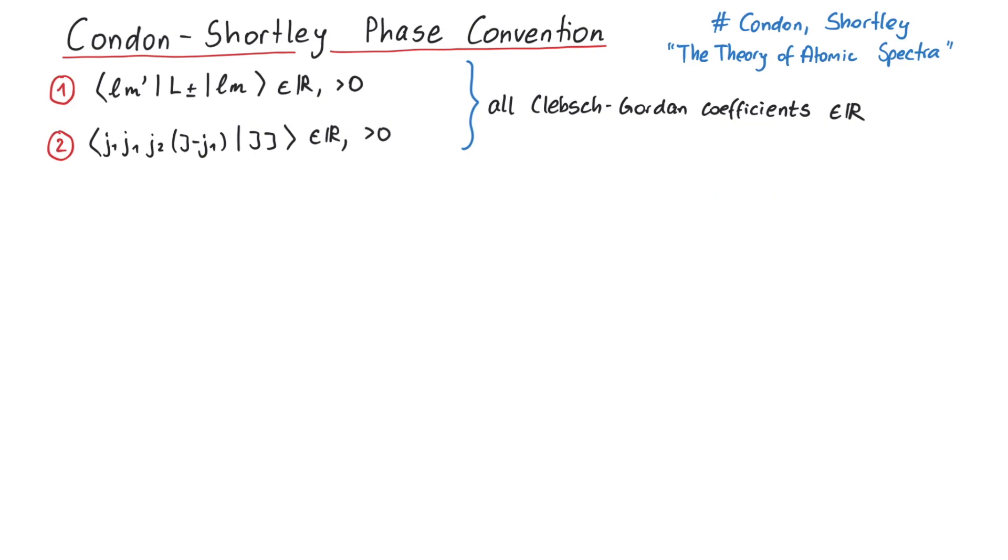First off, imagine what happens if this minus one wasn't there. In order to remove it, we would have to multiply every Ylm with a factor minus one to the power of minus m. And to be as general as possible, we include some other phase, which can depend on l and m.